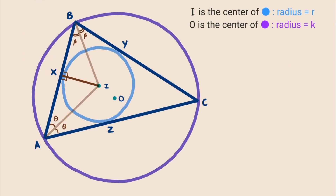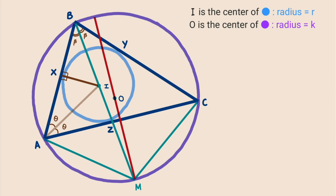Now we extend the line segment BI as a straight line, so it intersects the circumcircle at point M. We then draw line segments joining points A to M and C to M. Next, we draw a line segment from point M that passes through point O and intersects the circumcircle at point N. Note that MN is the diameter of the circumcircle, so the length of MN equals 2 times K.